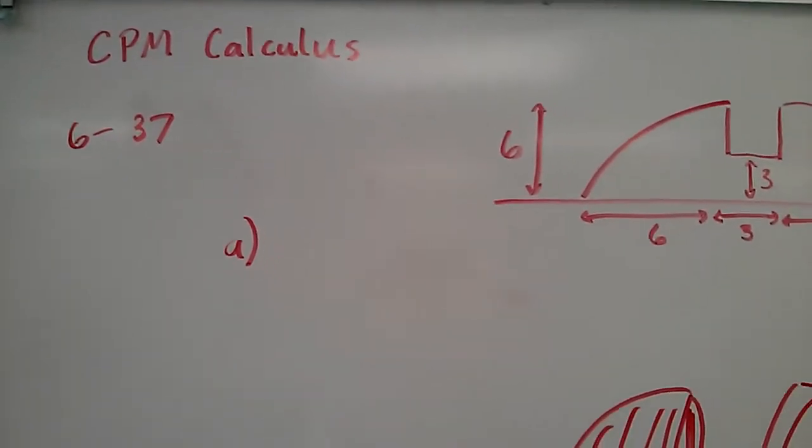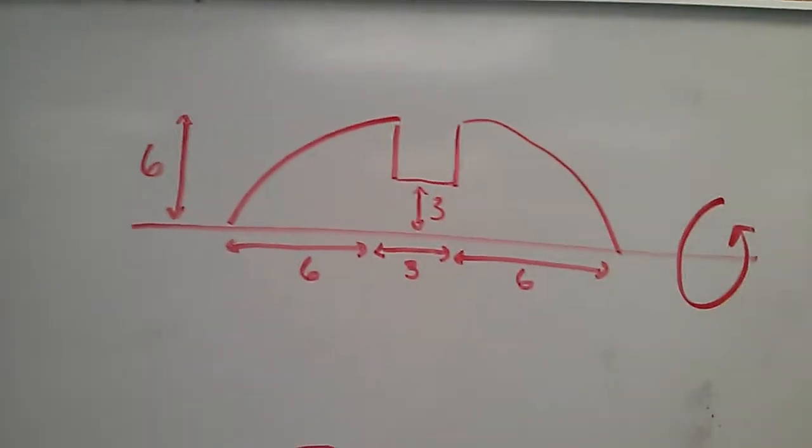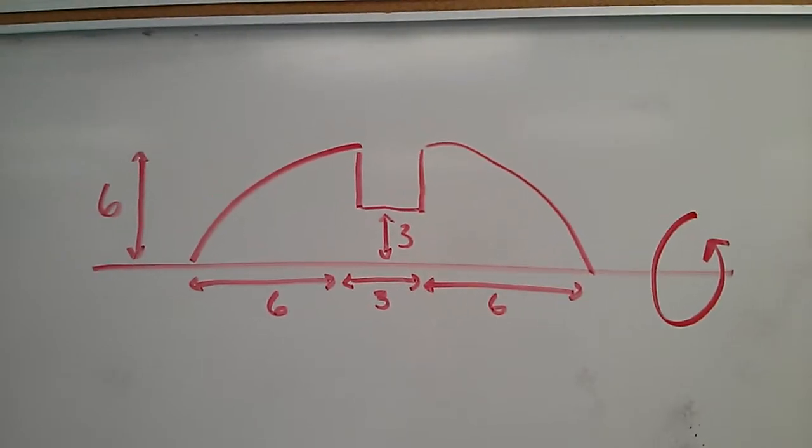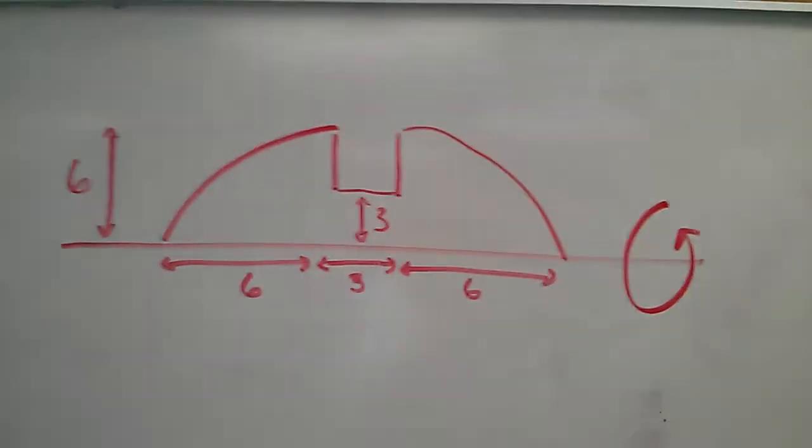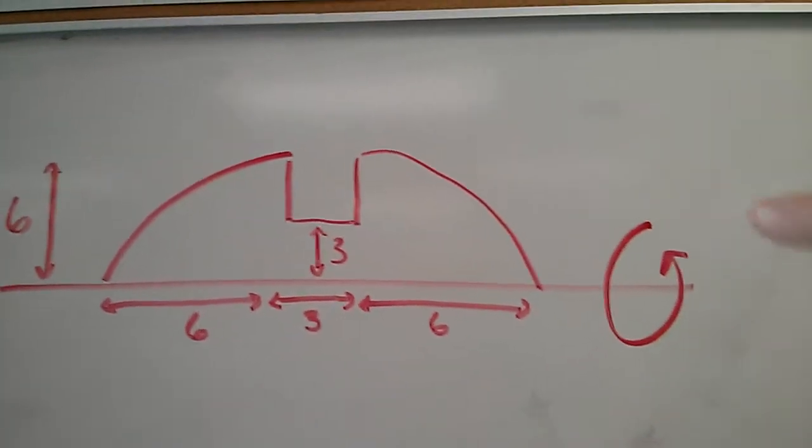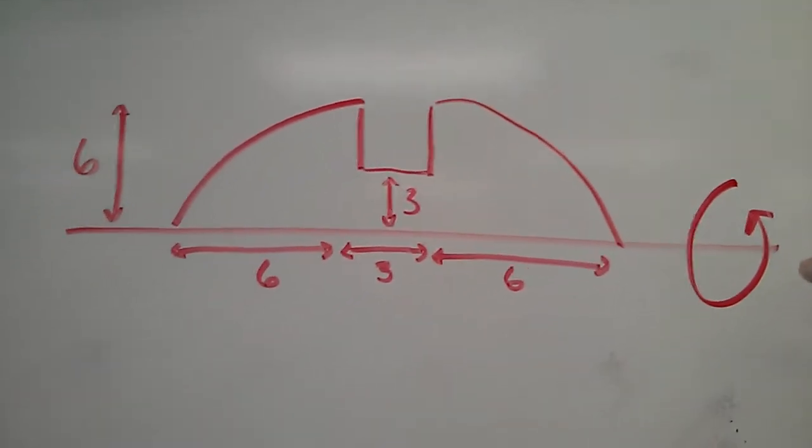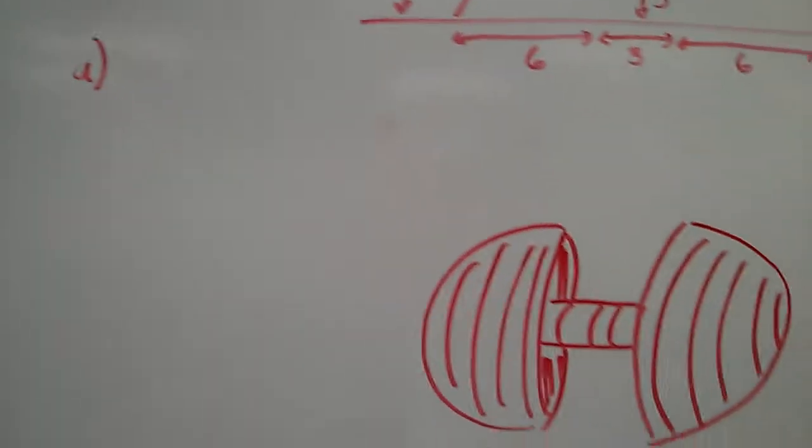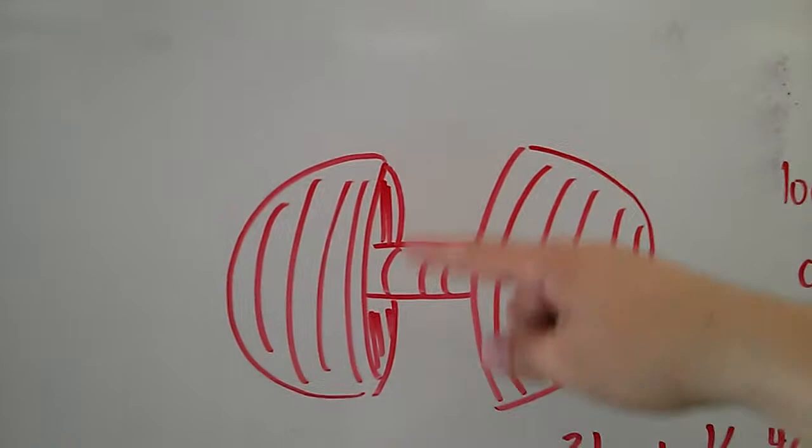Calculus chapter 6, number 37. We have this shape rotated around the axis. For part A, we need to draw it. If you rotate around the axis, you're going to...